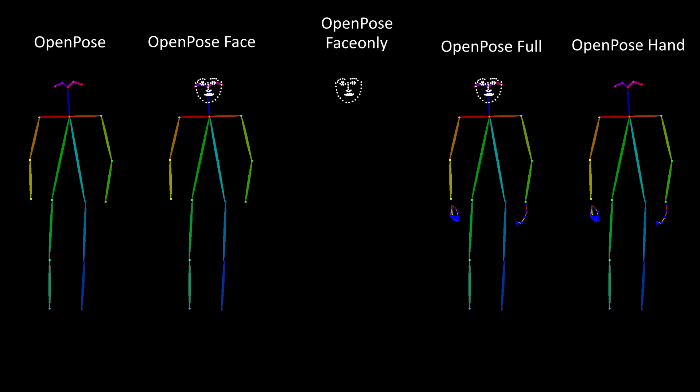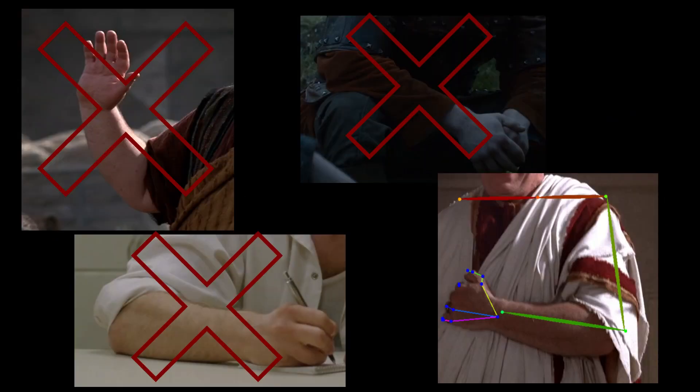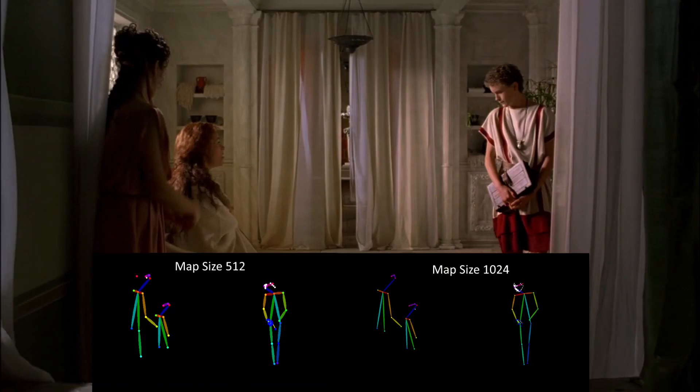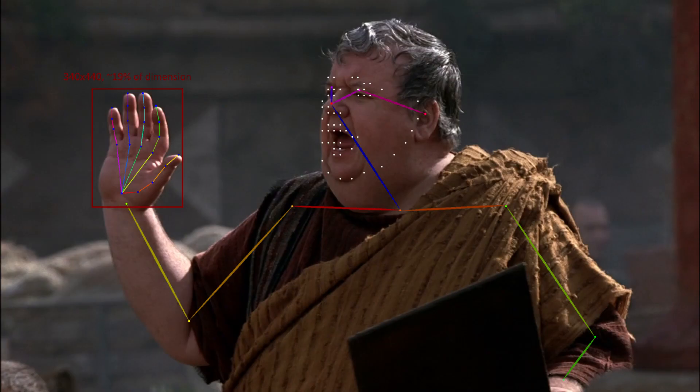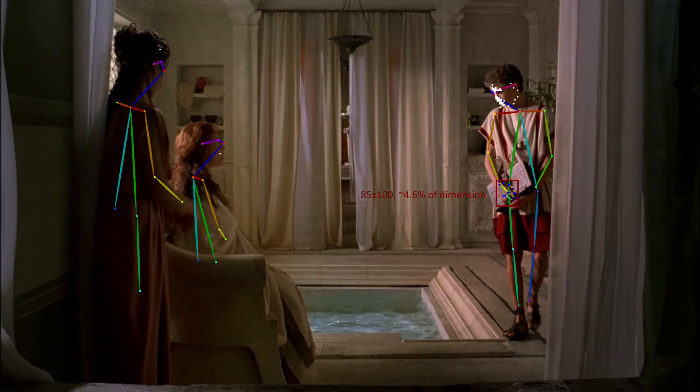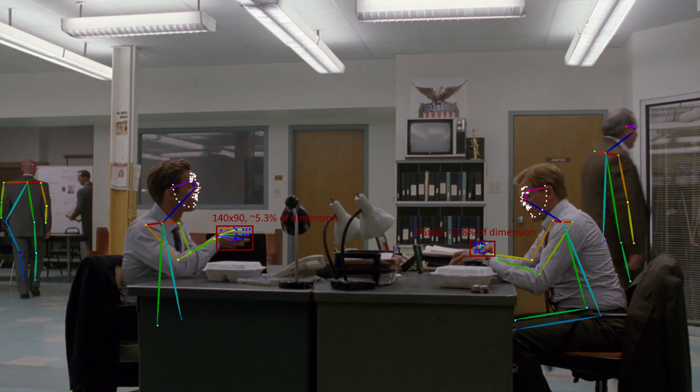Unfortunately, despite having five preprocessors for OpenPose, there is no option that will only detect hands. To make matters worse, detection of hands seems to be linked to the rest of the OpenPose skeleton. Much like faces, changing the map resolution can hurt or help detection of hands, and the dimensions of the image matter much less than the proportional size of a hand within the image. In terms of size, I managed to detect hands as small as 4% of the image's resolution, which is roughly 55 pixels in height and width in a 1080p image.